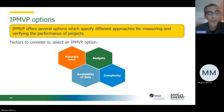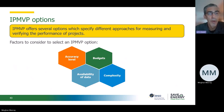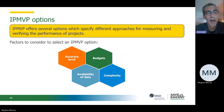Now we'll overview the four IPMVP options — the same options used in essentially all protocols. The considerations are how much money is appropriate to spend on M&V, what data is available, how accurate do the stakeholders need the results, and how complex is the project.